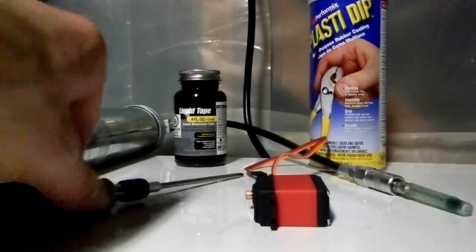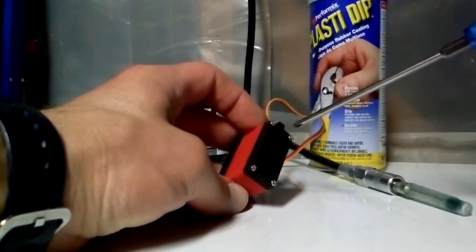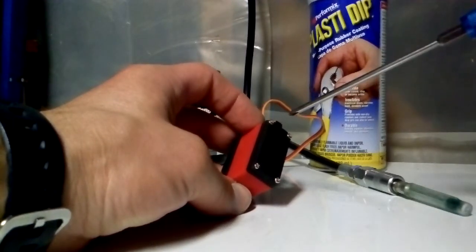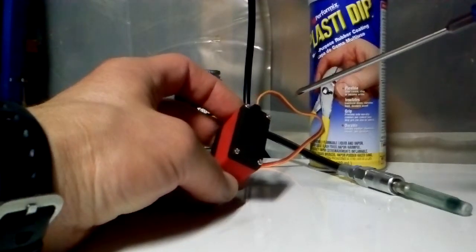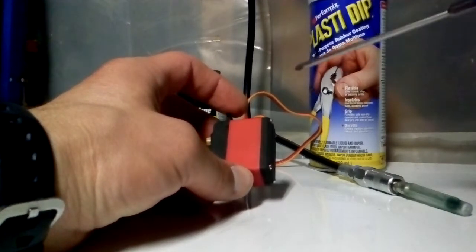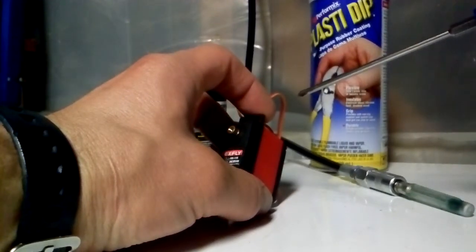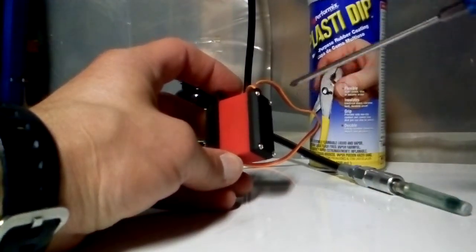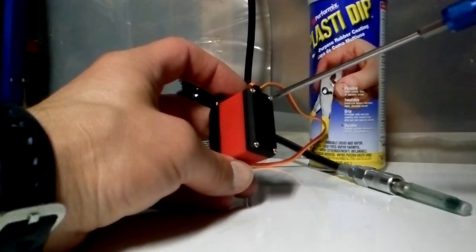One tip before you start tearing apart your servo: make sure that you test it out on your RC truck. Make sure that it functions. Some places will warranty them if there's a defect and replace it for free or refund your money. So I highly recommend you test it out first. Make sure it functions. If it functions, go ahead and waterproof it, because once you do that, nobody will warranty it. I've tested this one - it works great - and we'll go ahead and start tearing it apart. It's a pretty simple, easy process.